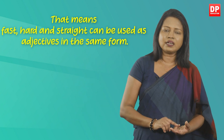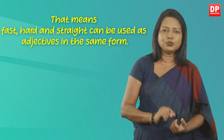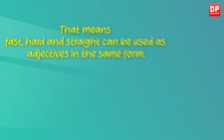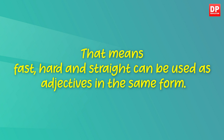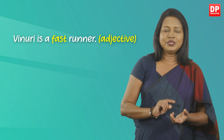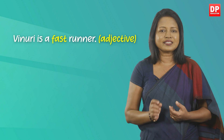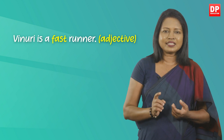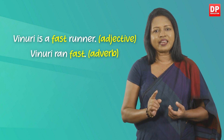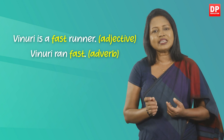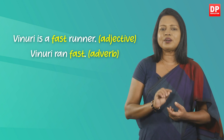Except for 'well', all these adverbs have the same form as their corresponding adjectives — that means fast, hard, and straight can be used as adjectives in the same form. Look at these sentences: in the first sentence, 'Vinuri is a fast runner' — the word 'fast' is used as an adjective describing Vinuri. In the second one, 'Vinuri ran fast' — fast is used as the adverb describing how she ran.